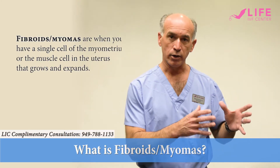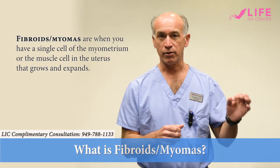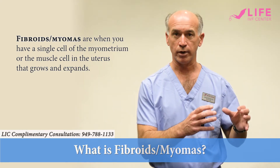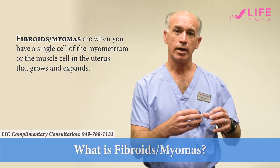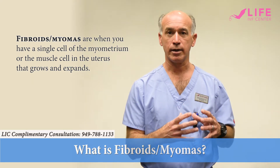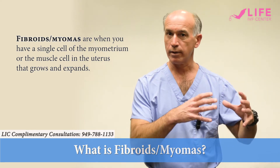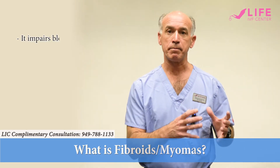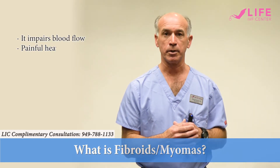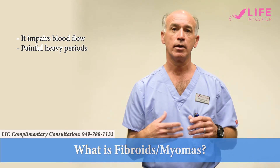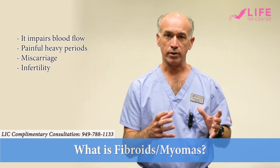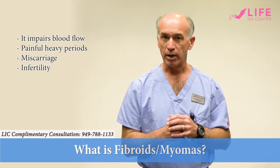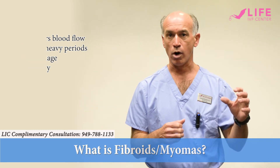Fibroids or myomas are when you have a single cell of the myometrium — the muscle cell in the uterus — that grows and expands, forming a tumor mass that is often and usually benign, but it impairs blood flow and can contribute to painful heavy periods, miscarriage, and infertility. This is where you have a benign tumor mass of muscle cells growing in the wall of the uterus.